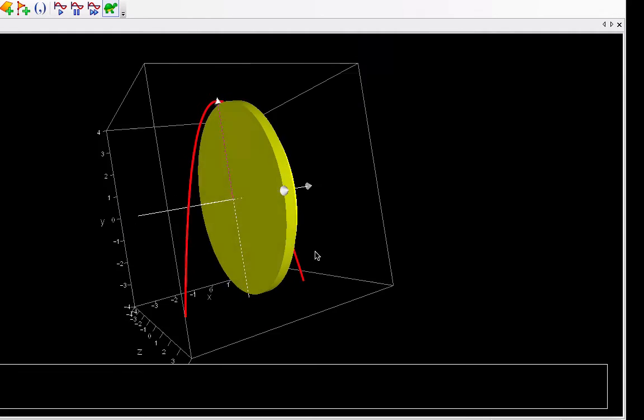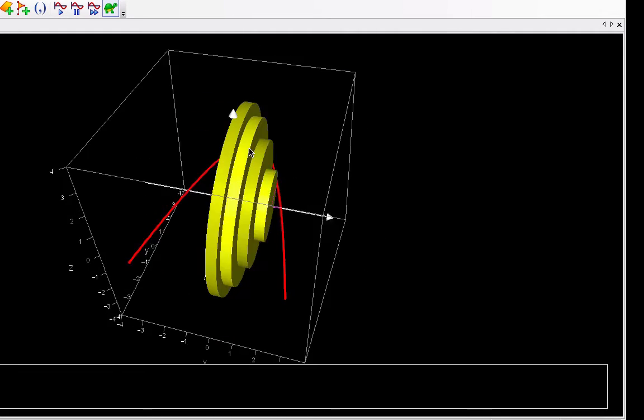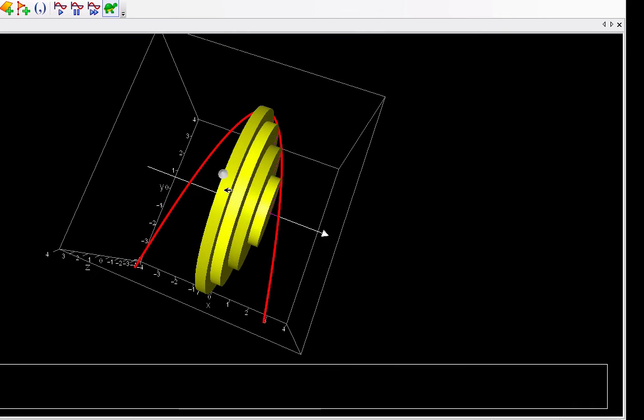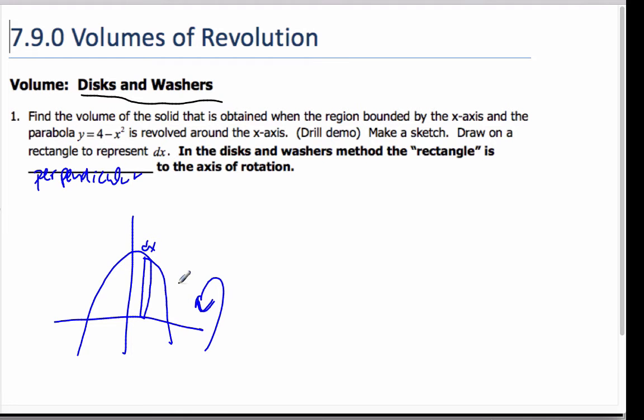And when it's done, you see that we have these discs or washers. We add them all up, make this interval dx small, and we get the actual volume of revolution. And so to do it, I know I get these circles. And the area of a circle is pi r squared.